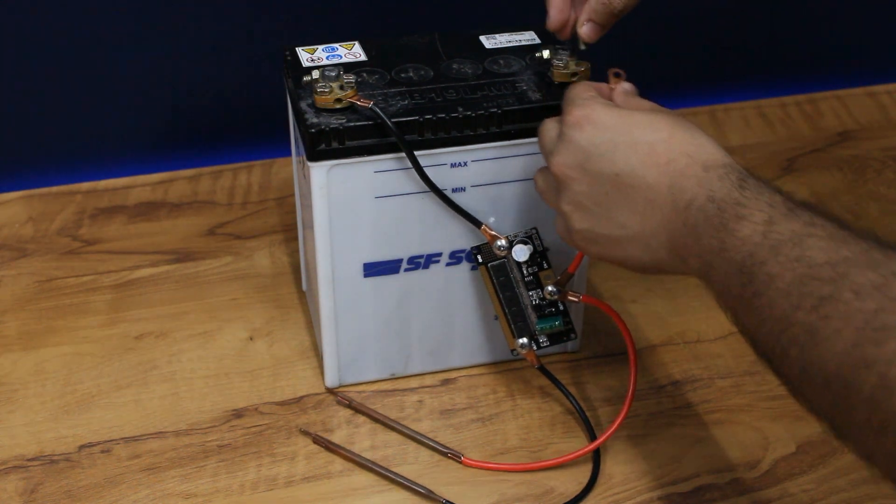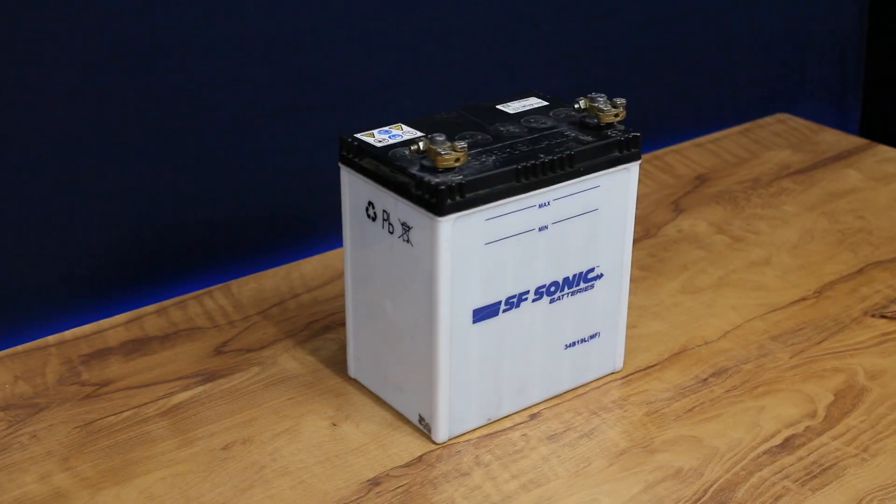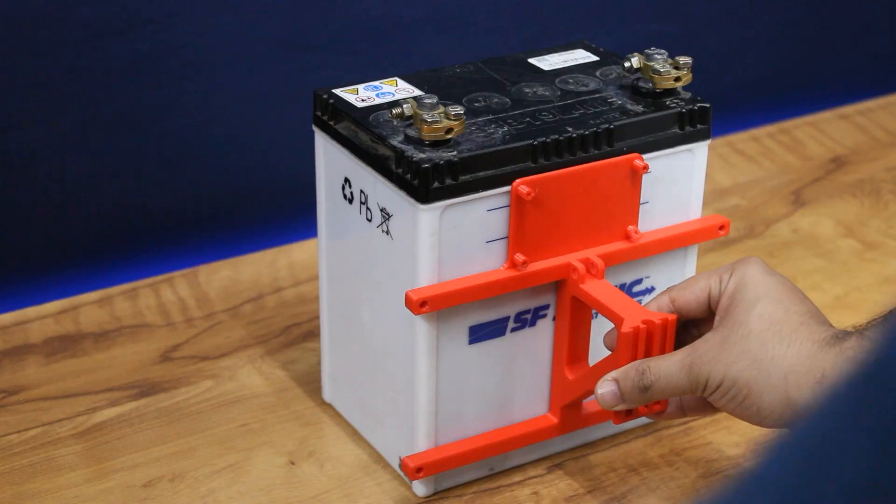The assembly is quite simple. First, unplug the spot welder wires from the battery. Mount the base plate onto the battery using the two battery mounts.